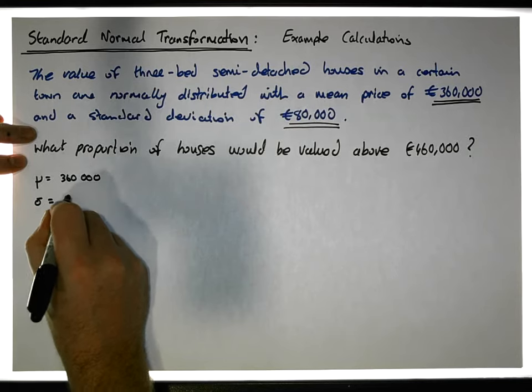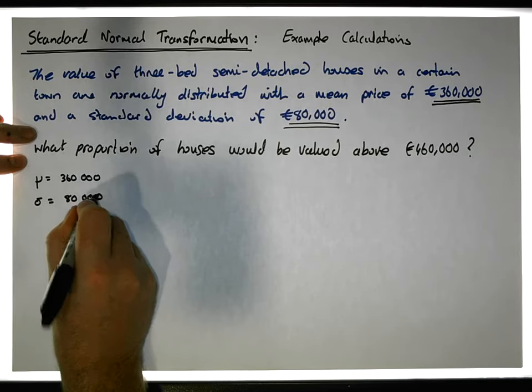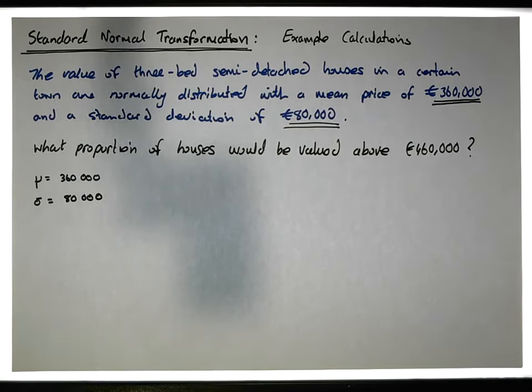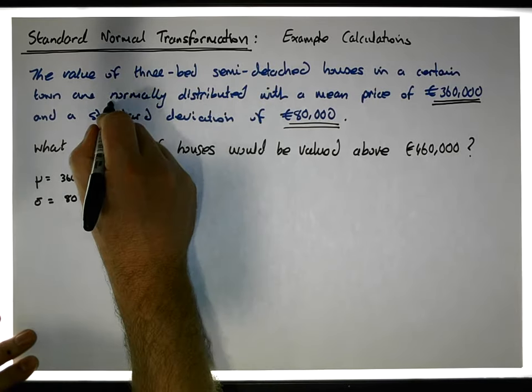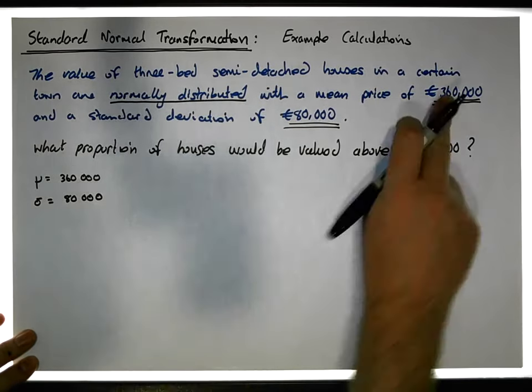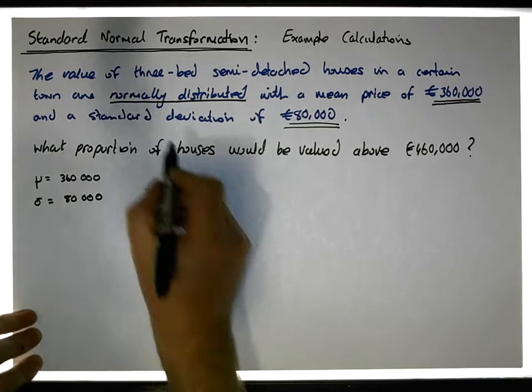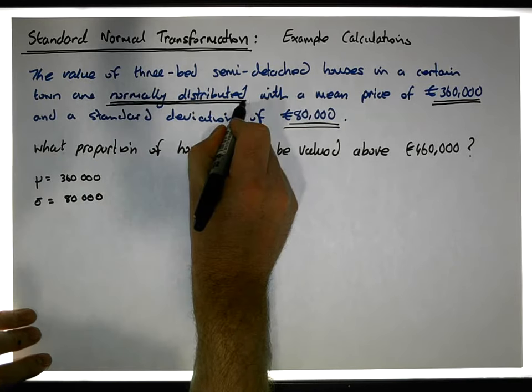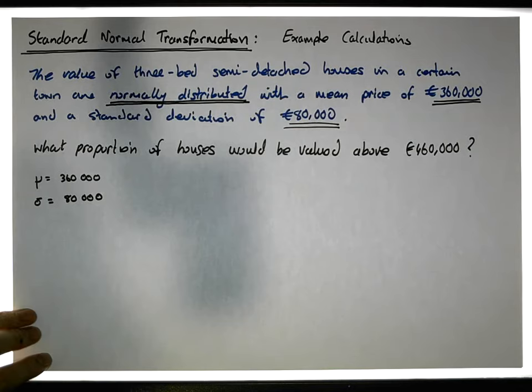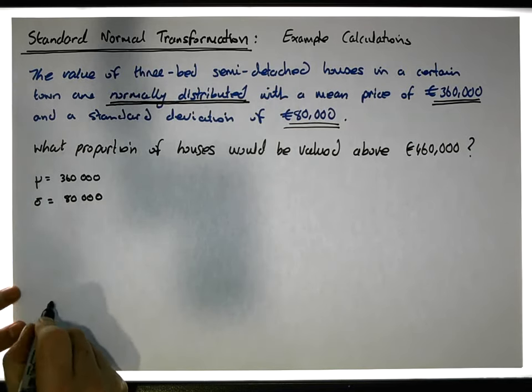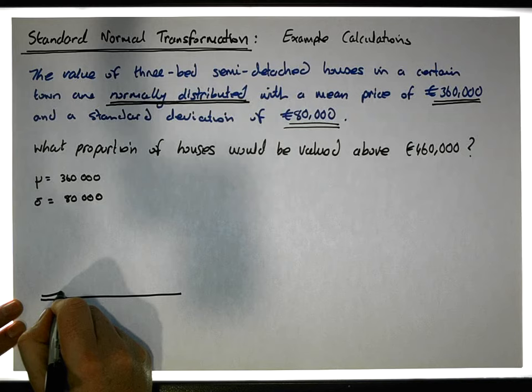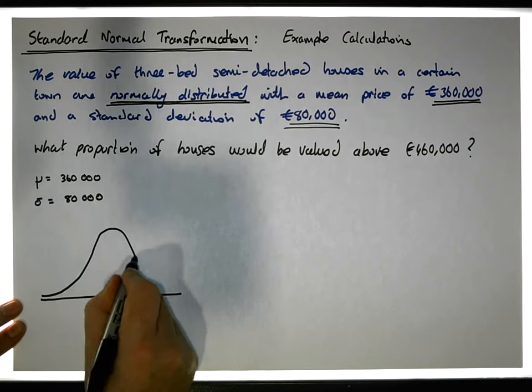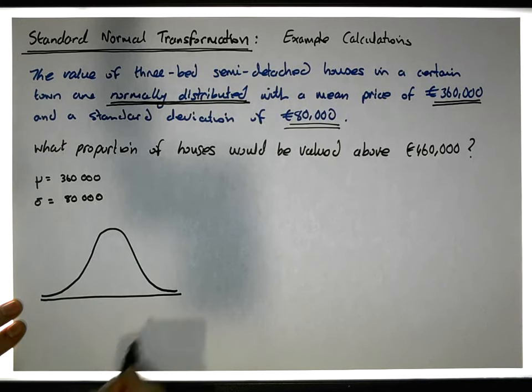Once we have that, what we should do is, we know it's normally distributed, so we should set this scenario out on a normal curve. The normal curve has these particular parameters. It's normally distributed, so we have some sort of bell-shaped curve that looks something like this.